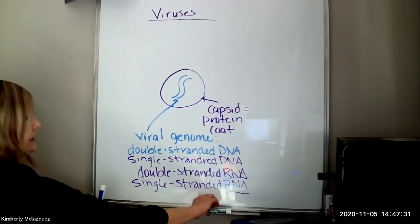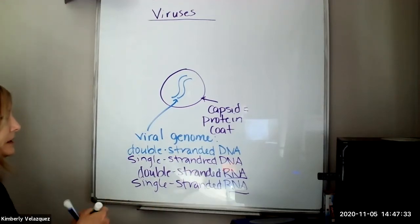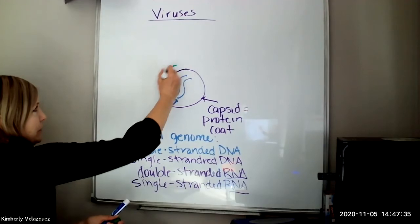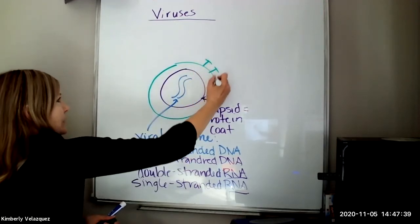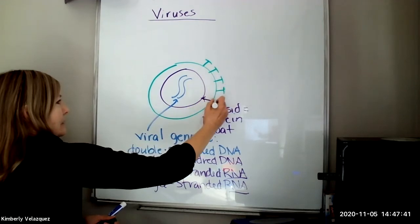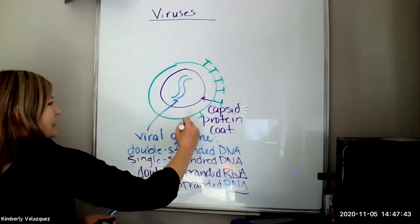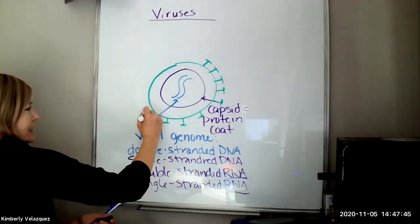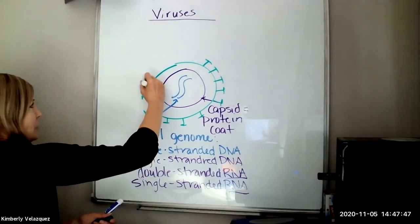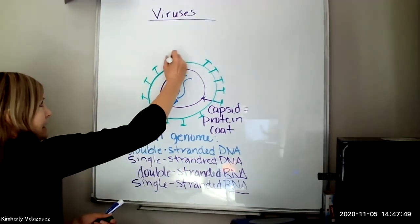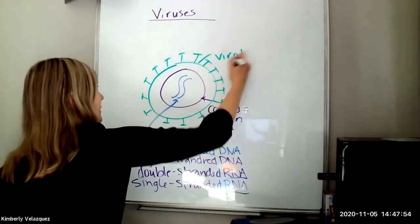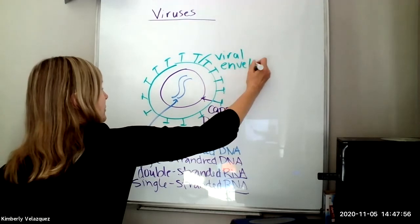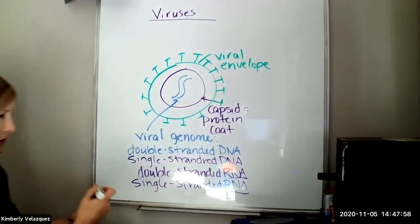And then some viruses on the outside of this capsid have a viral envelope. And that viral envelope is going to have some proteins associated with it. And oftentimes, that viral envelope is actually made from host cell membrane.